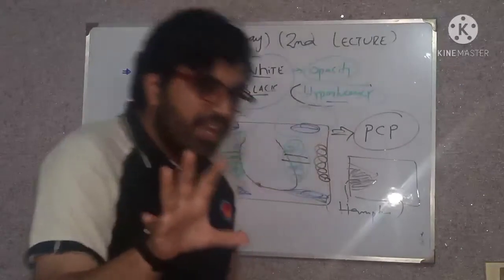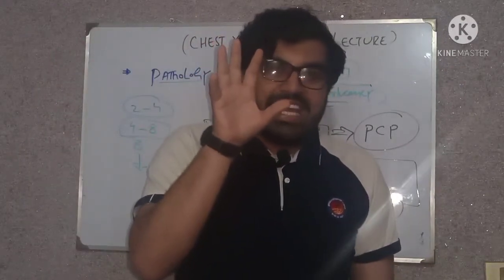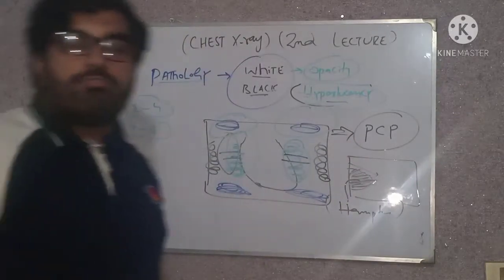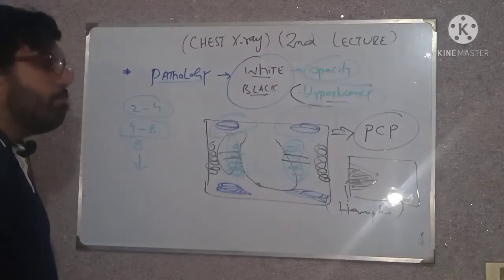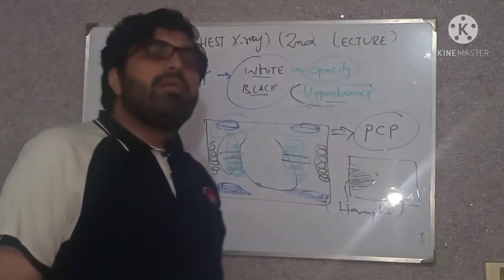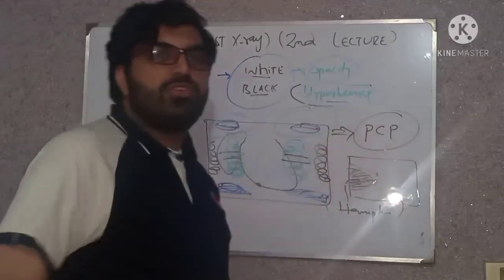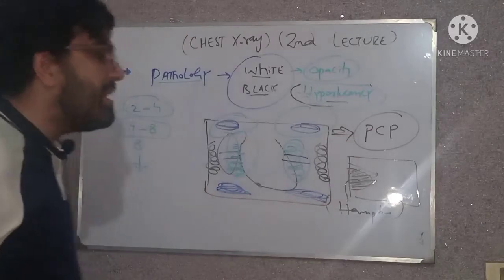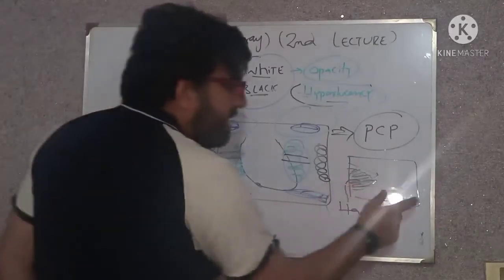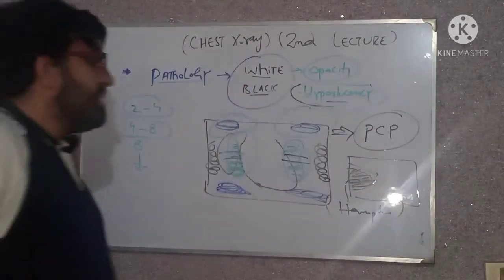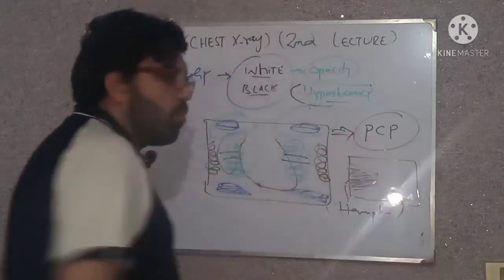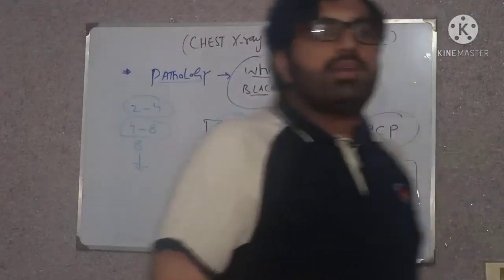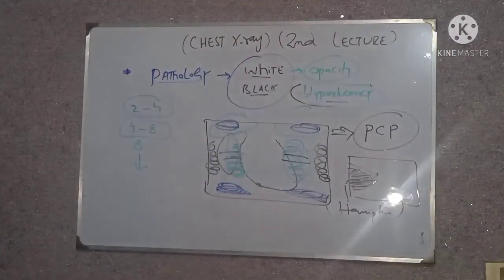Most X-rays in exams are usually of TB or, nowadays, COVID pneumonia. For COVID, you would say: 'There are pleural-based opacities bilaterally, extending from periphery toward the center, sparing the apical zone, the central zone, and the basal zone. The CP angles are clearly visible. Keeping in view the current pandemic, this X-ray is highly suggestive of COVID pneumonia.'